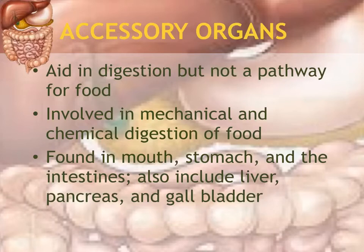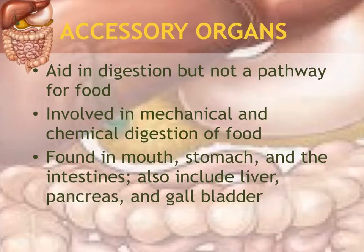Organs included as accessory structures are those inside the mouth like the salivary glands and the teeth. The stomach has a bunch of glands that produce secretions that are part of the gastric juices. The intestines have glands that produce fluids that aid in movement of food. And then we have organs like the liver, pancreas, and gallbladder that also aid in digestion.